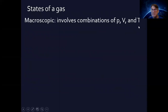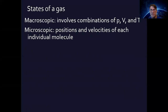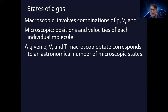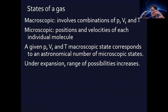The macroscopic state of a gas involves a combination of pressure, volume, and temperature — we've done macroscopic analyses of those. For a microscopic analysis of a gas, we would need to know the position and velocity of each individual molecule, which Heisenberg has said is impossible. So we deal with statistical averages, because a given macroscopic state corresponds to an astronomically large number of different possible microscopic states. As the gas expands, the range of possible states increases, and entropy increases inevitably.